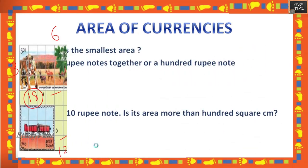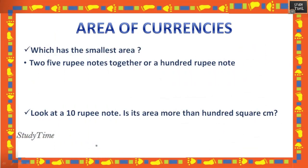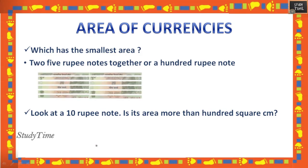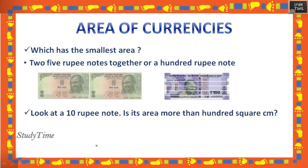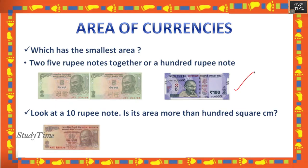Next: area of currencies. Which has the smallest area — two 5-rupee notes together, or a 100-rupee note? The smallest one is the 100-rupee note. Also, look at a 10-rupee note: is its area more than 100 square centimeters? No, it will be less than 100 square centimeters.